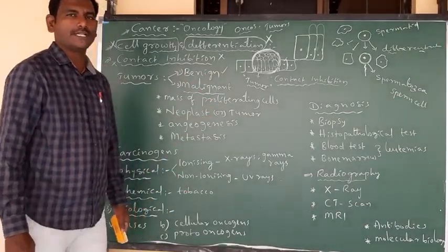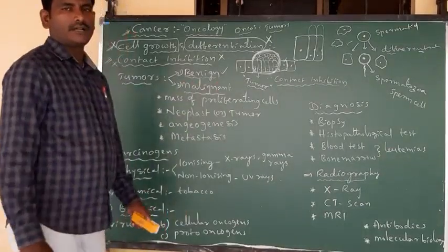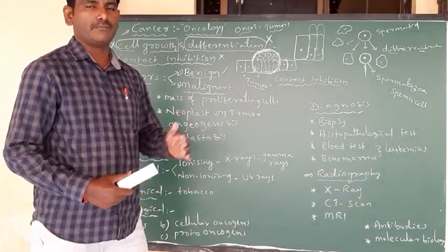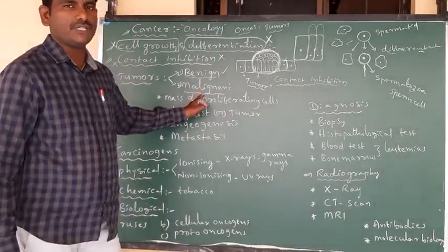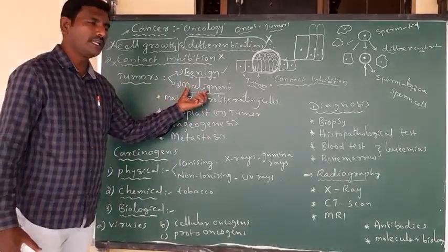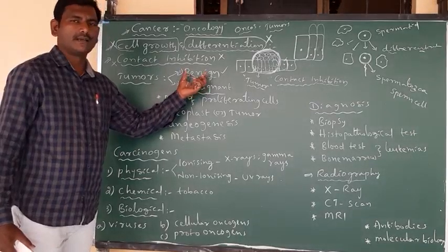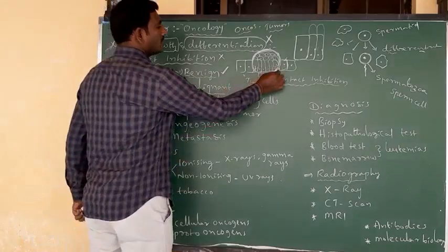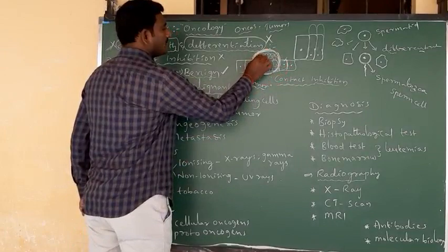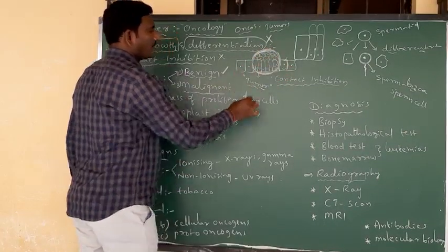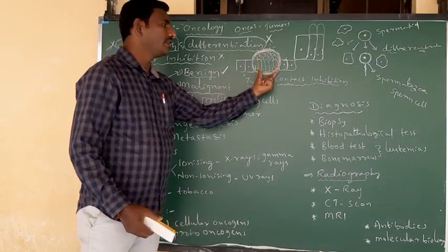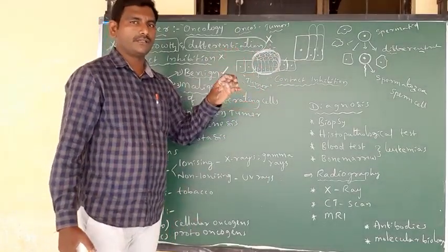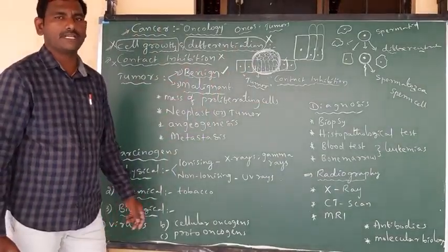We already know the meanings of benign and malignant from plasmodium vivax, which causes a type of fever called benign tertian malaria. Benign means not dangerous, and malignant means it is a severe, serious type of disease. Normal type of cancers are termed as benign. In benign tumors, the main characteristic feature is that once the tumor cells are formed, all these tumor cells are covered with a layer and present at only one place — they are not transported from one place to another in our body.